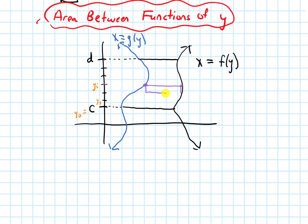I'm going to draw vertical lines until I reach the edge of this subinterval, and then another horizontal line to make my rectangle. If I look at this rectangle, this width is going to be a delta y, rather than a delta x. The length — to get that, I will need to plug in this y value, y_i, into both of these functions: into the f of y function and into the g of y function. That'll tell me the x coordinate here and the x coordinate here, and then I subtract. So it will be f of y_i minus g of y_i.